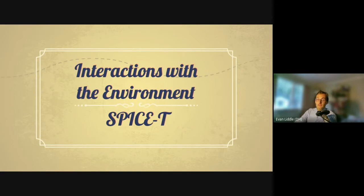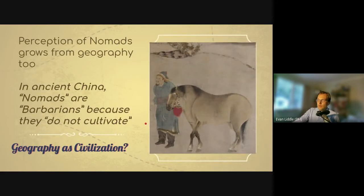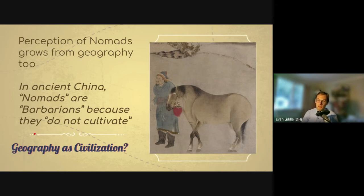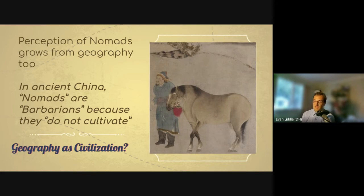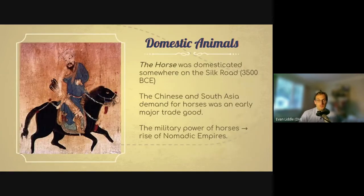Let's talk about environmental interactions — the ecological stuff. Geography is often associated with civilization, and this was true for Silk Road societies. In ancient China, before the Han Dynasty, nomads were perceived as barbarians because they didn't farm. So throughout history, even though nomads played a huge role in the Silk Road, they were often looked down upon. However, it's worth noting that the domestic animals that played such a huge part in the Silk Road were domesticated in Central Asia. The horse was domesticated somewhere around what is now Russia, Ukraine, or Kazakhstan, around 3500 BCE.